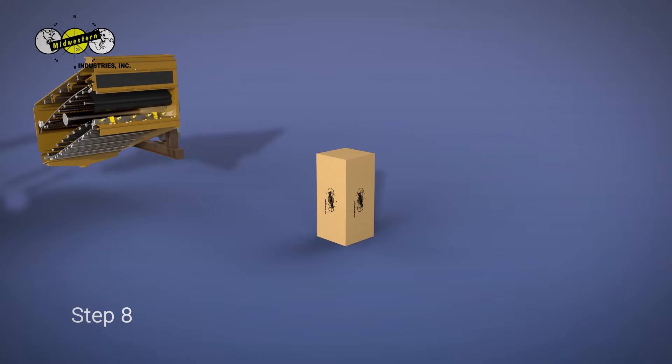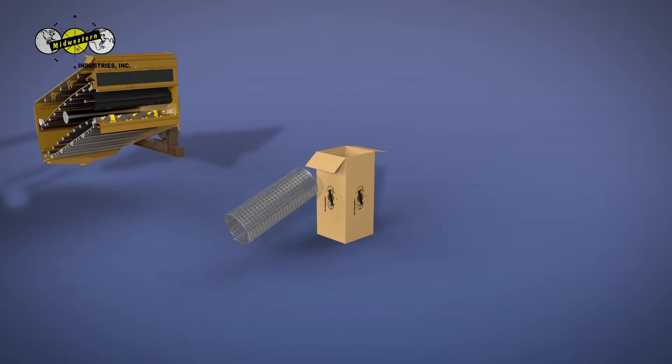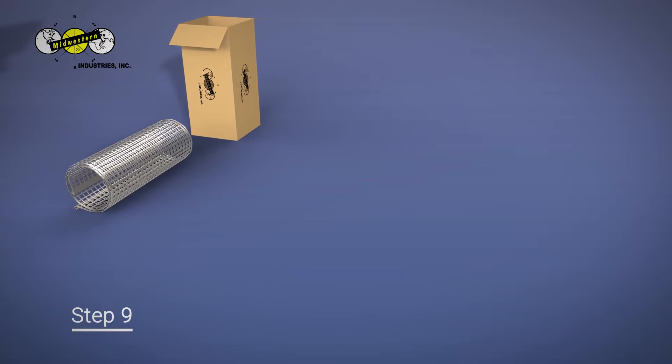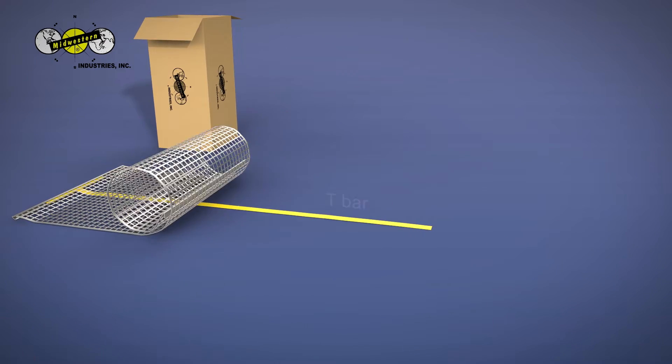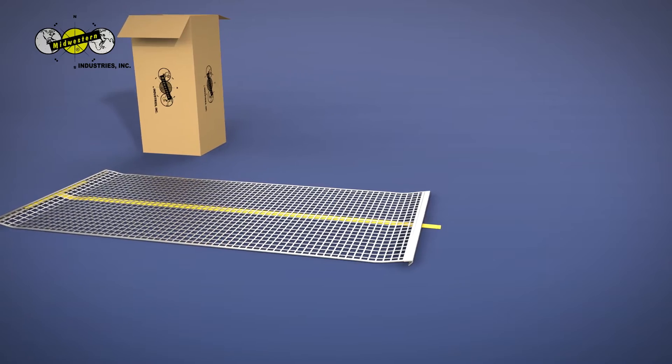Step 8: Unpackage the new Midwestern screen. Step 9: Utilize the T-bar screen changing tool and insert it into the discharge end of the screen panel.